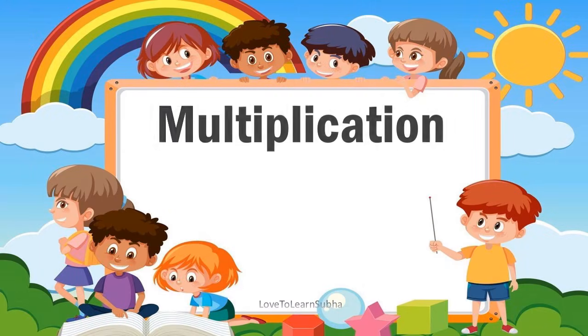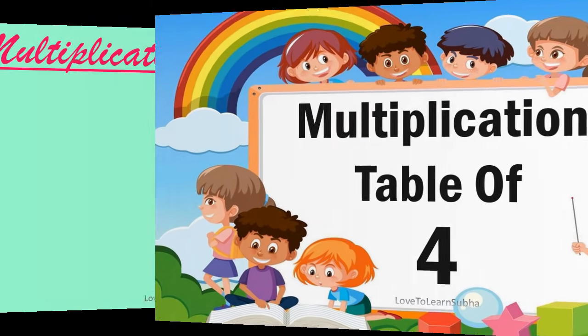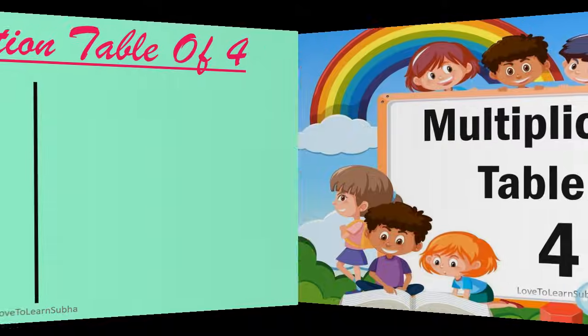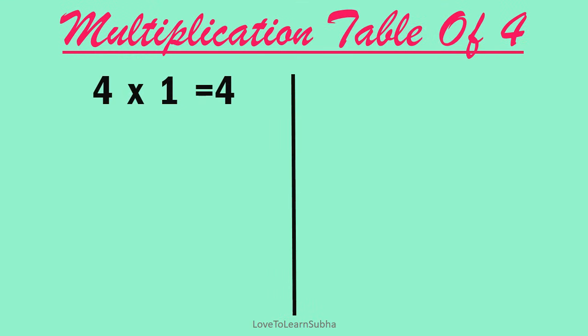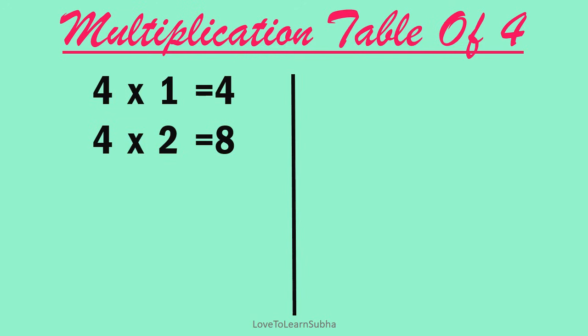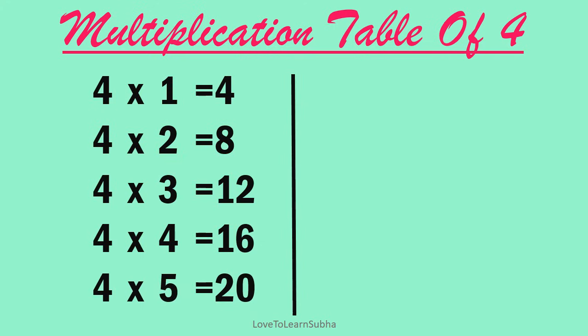Multiplication table of 4. 4 ones are 4, 4 twos are 8, 4 threes are 12, 4 fours are 16, 4 fives are 20.